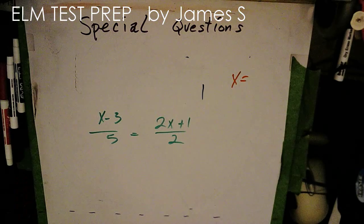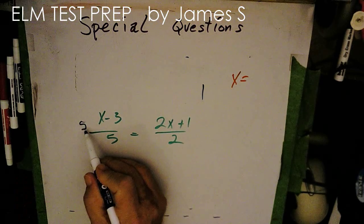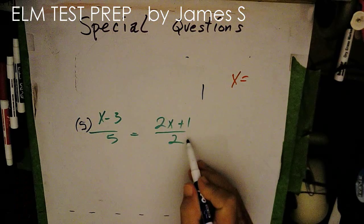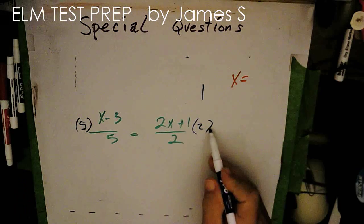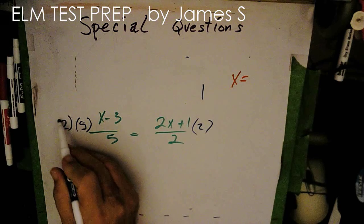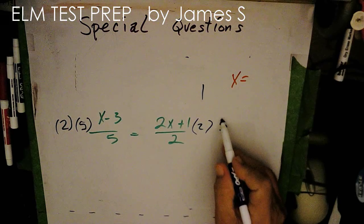So now I can see that to get rid of this 5 I'm going to multiply this side by 5. To get rid of this 2 I'm going to multiply this side by 2. So since I multiplied this side by 2 I'm going to have to multiply this side by 2. And since I multiplied here by 5 I will multiply here by 5.